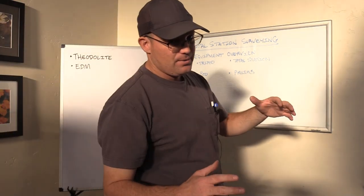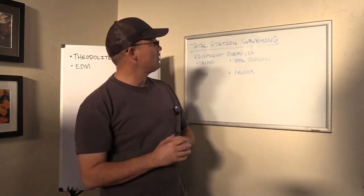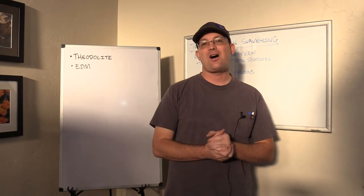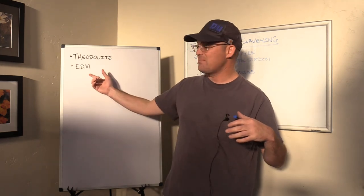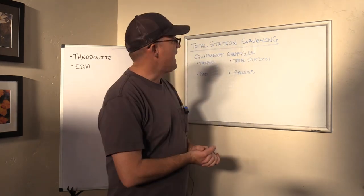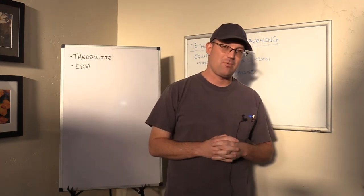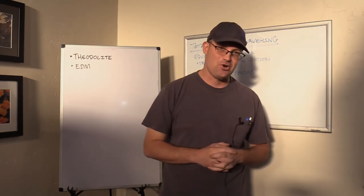All right. So there's kind of a quick rundown of rods and prisms. I know this is going to be a short video, but what I'm going to do is I'm going to end it. Then when the video comes back on, we're going to talk a little bit about how do electronic distance meters actually measure and what is a prism offset and why do you have to worry about prism offsets if you're a field surveyor.